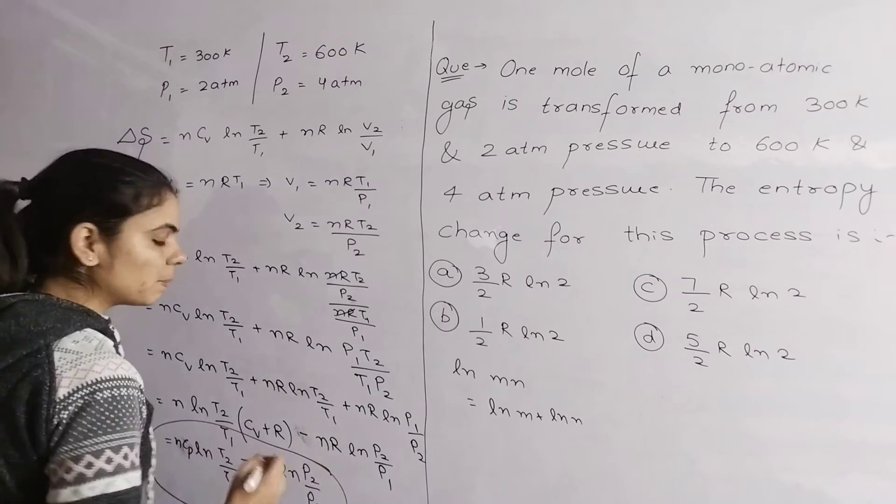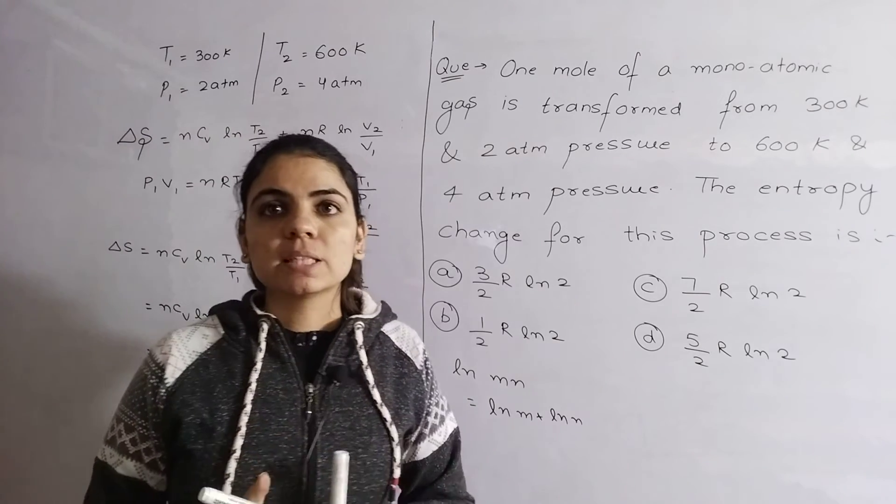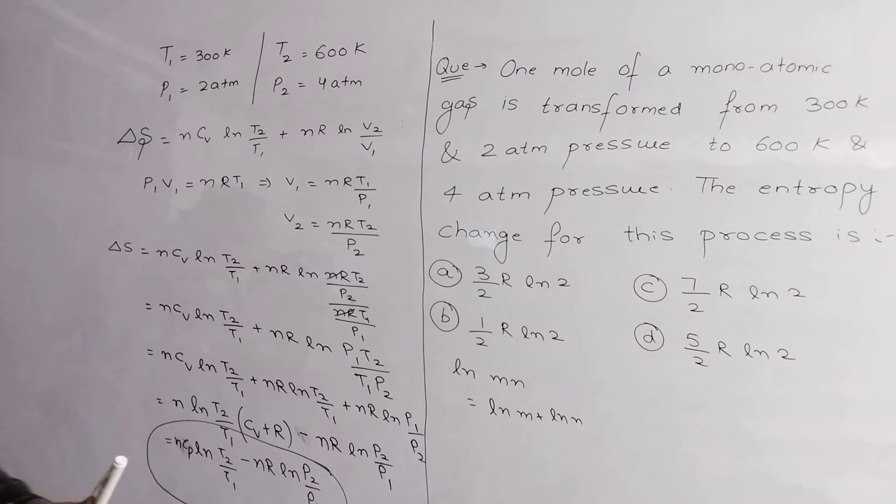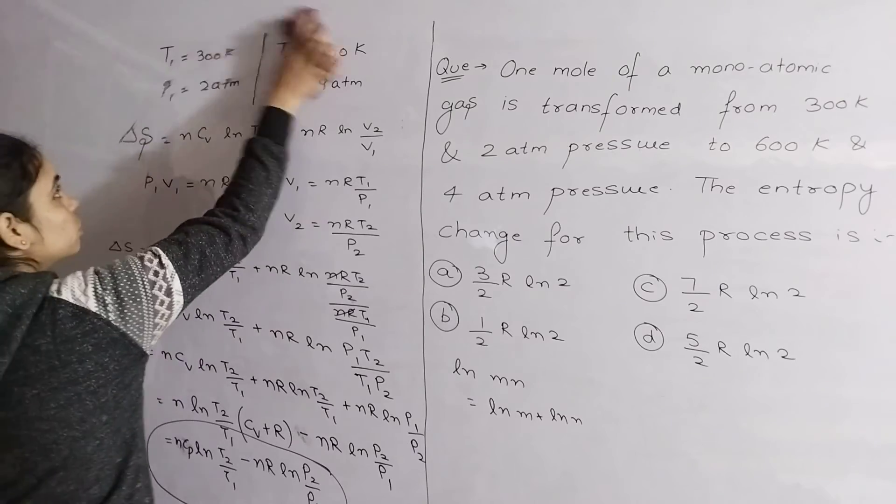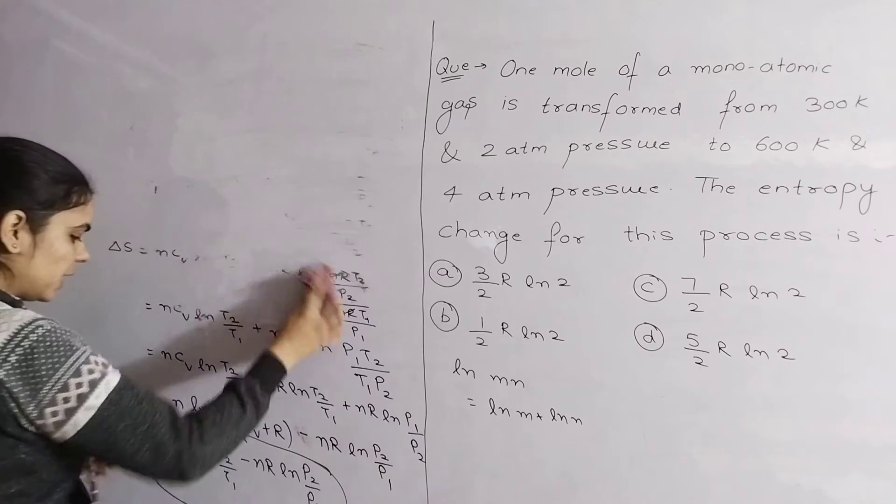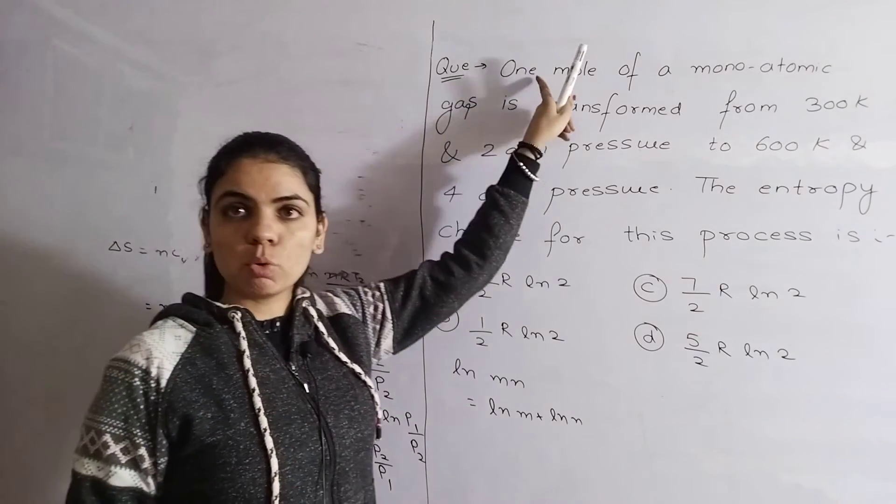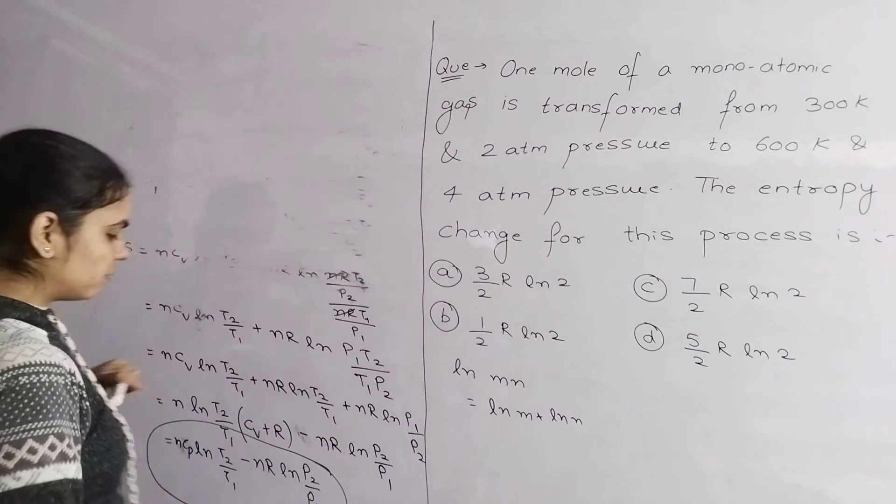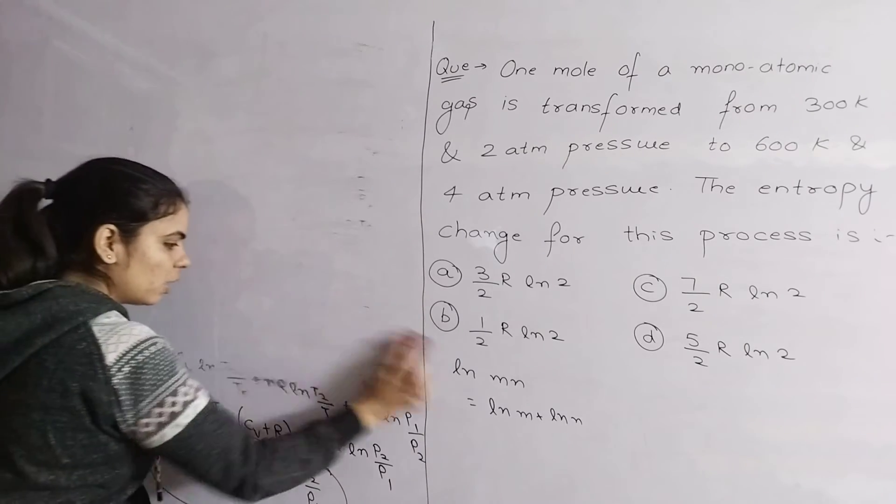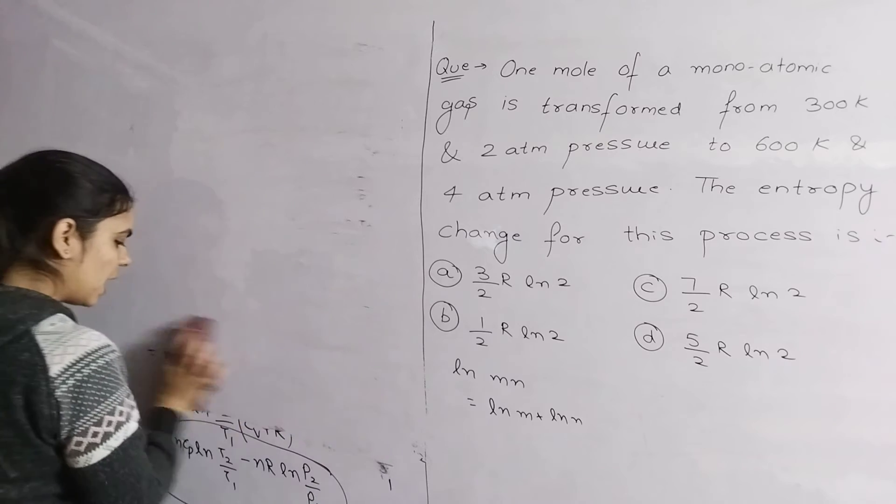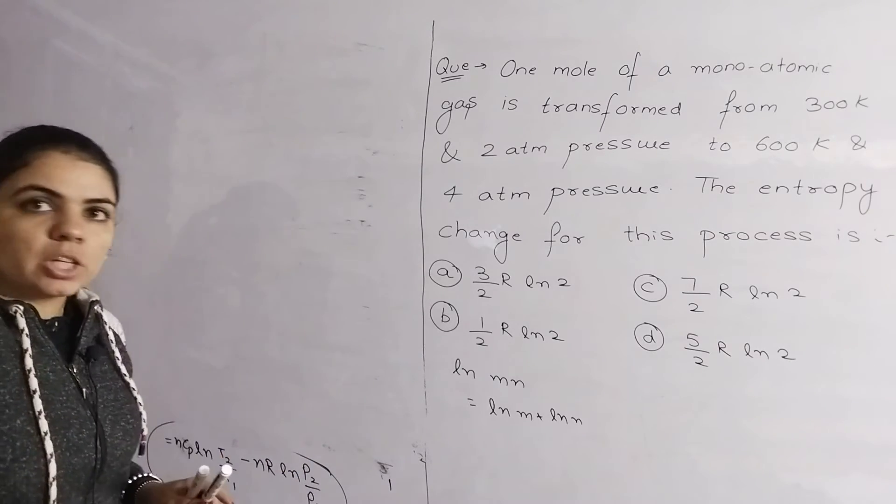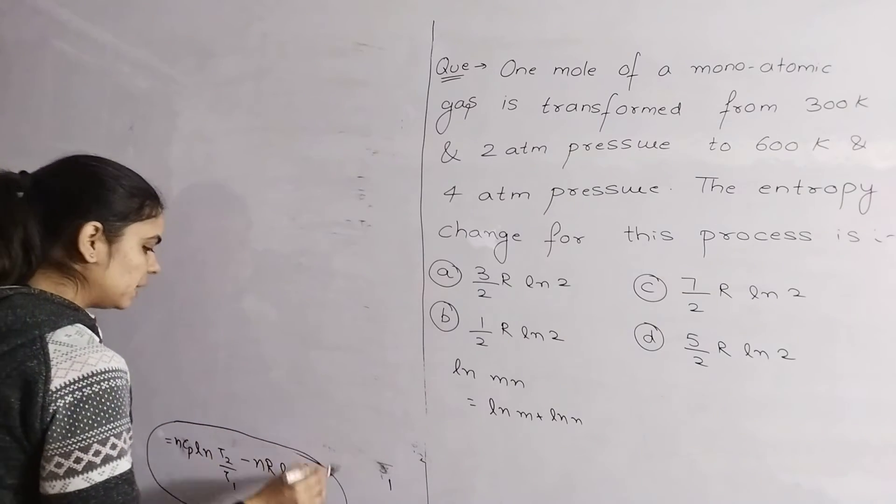In the exam, there is no such expression given. We have to derive this expression. So we derived the expression first. Now we will use this expression to solve the question. Let's check what values we need. N - number of moles is 1 mole. And we need T1, T2, P1, P2. That is already given. And we need R, which is 1.314. What else do we need? We need CP.